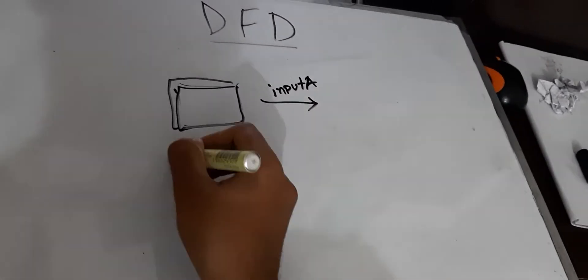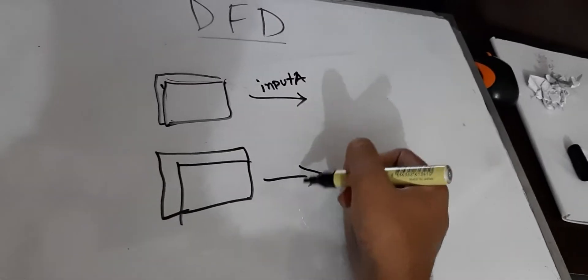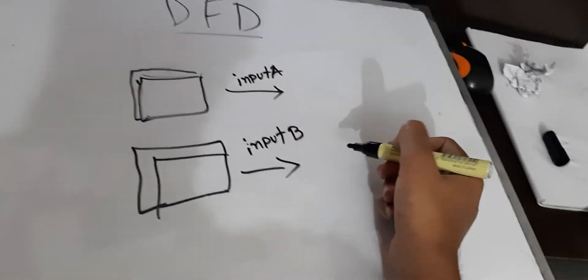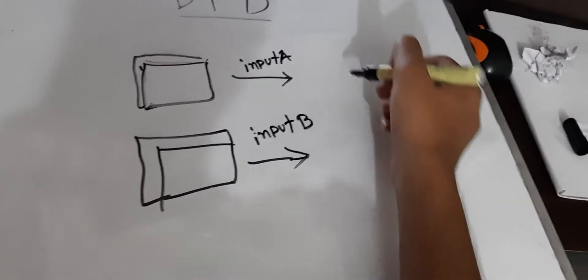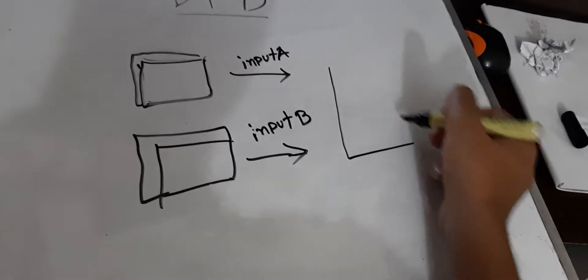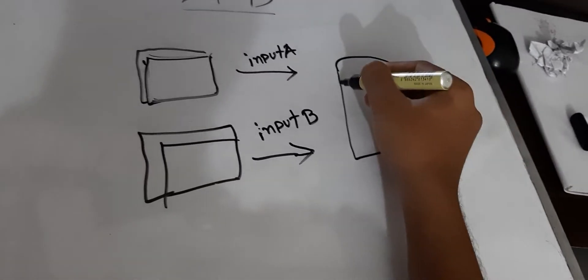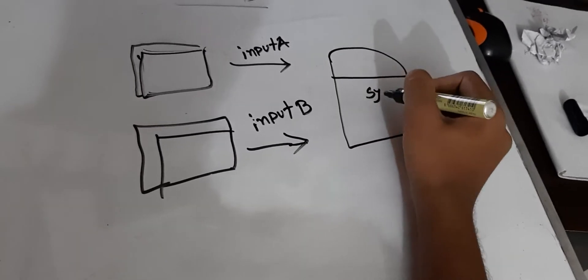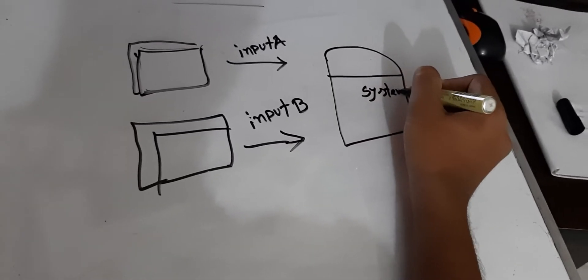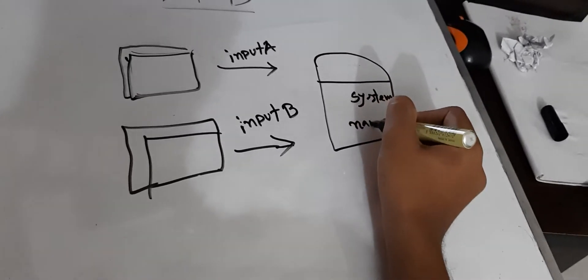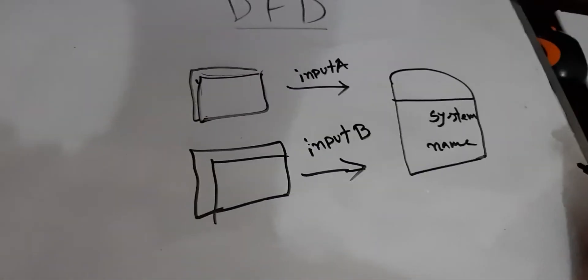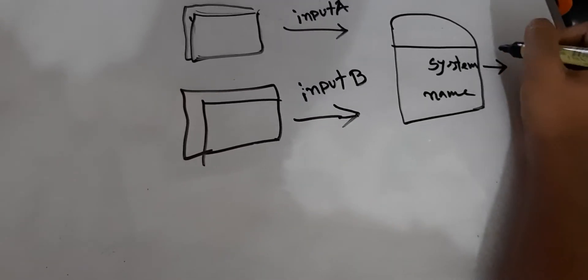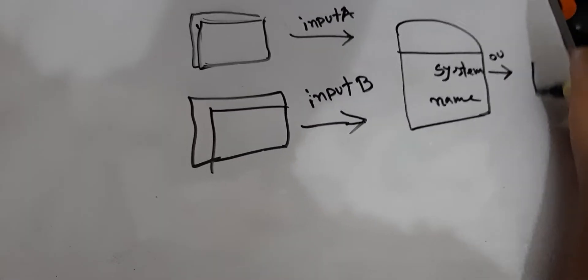There is a second entity. An entity gives input, which goes into the process. The system has a name — system name — and there is data flow and output.